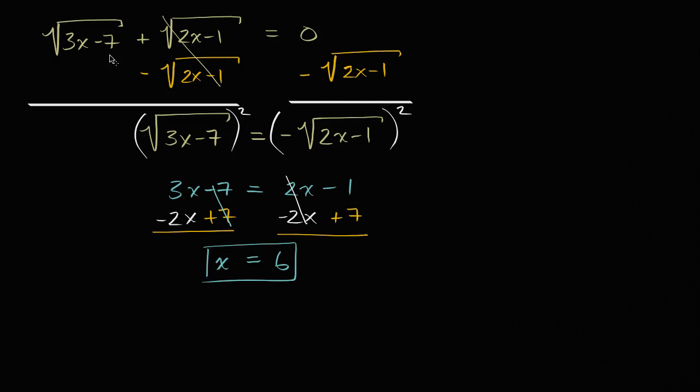Now let's verify that this actually works. So if we look at our original equation, the square root of three times six minus seven plus the square root of two times six minus one needs to be equal to zero. So does this actually work out?